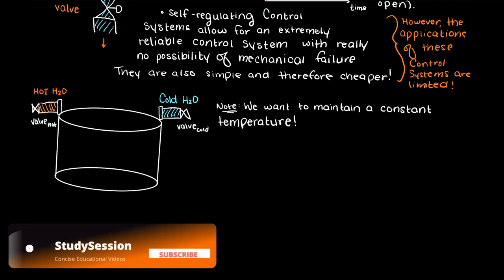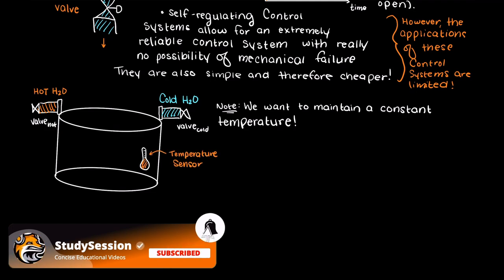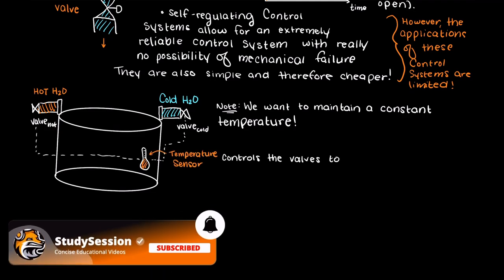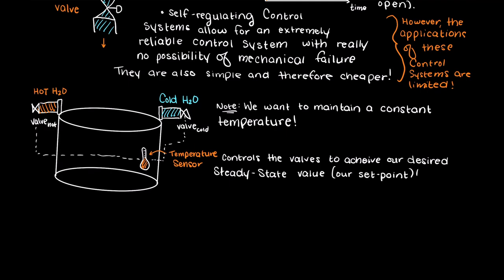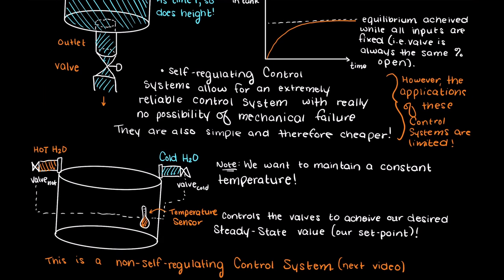Well we would need two valves that control our two inlet flows and a temperature sensor that allows us to change the amount of incoming fluids so that we can control the temperature. This is a non-self-regulating control system though, and that will be the focus of our next video in this control system lecture series.